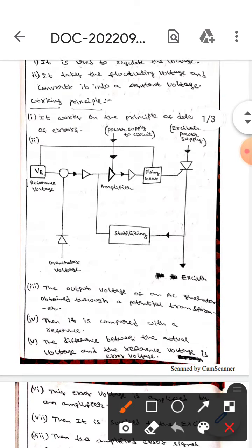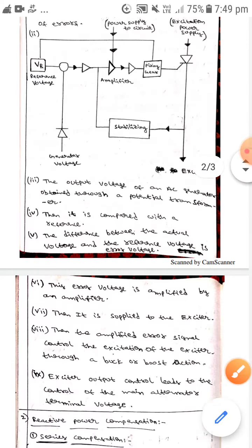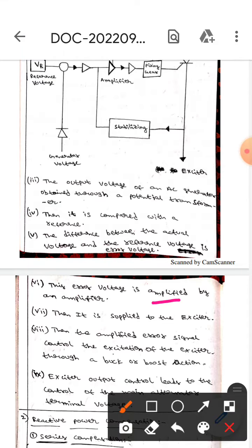The output voltage of an AC generator is obtained through a potential transformer, then it is compared to a reference. The difference between the actual voltage and reference voltage is the error voltage. This error voltage is amplified using an amplifier.